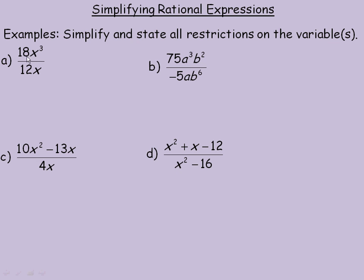Now in order to simplify this, look for the largest factor that divides into 18x cubed and 12x, both of them. The largest number that divides into 12 and 18 is 6. So if I divide 6 into both 18 and 12, 6 goes into 12 twice.